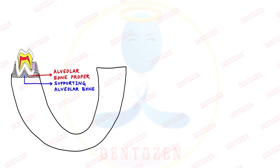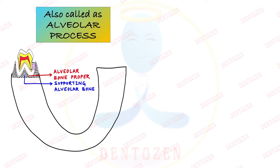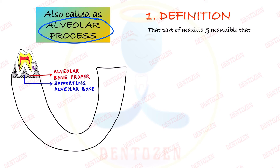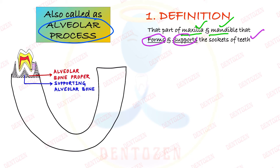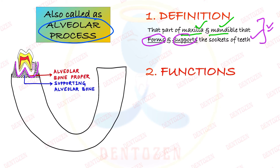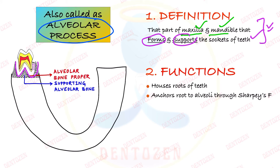Alveolar bone is also called alveolar process. It is that part of maxilla and mandible which forms and supports the sockets of the teeth — it forms the space for housing the teeth and also supports the roots with the help of fibers. Its functions include housing the roots, providing space for them, and anchoring them — attaching them with the help of Sharpey's fibers.